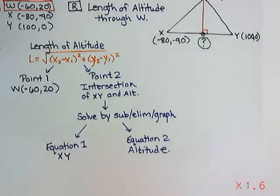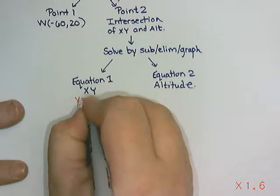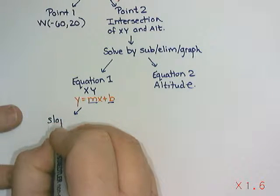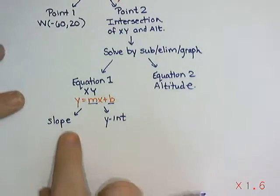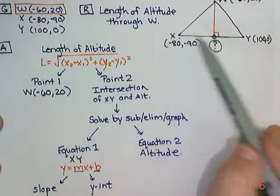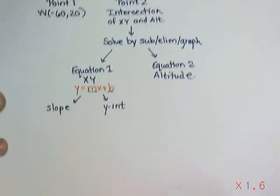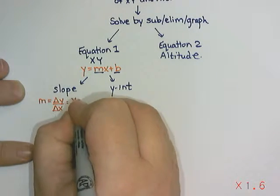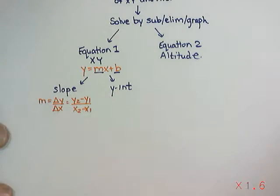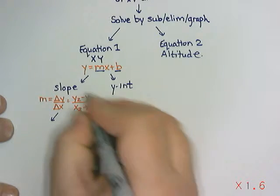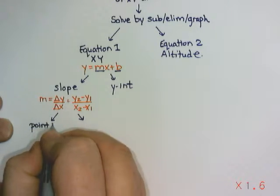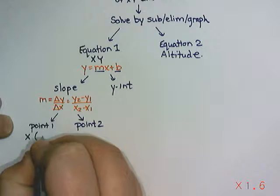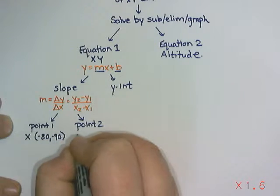So to find the equation of the side XY, an equation of a line, we always use the basic formula y = mx + b. And we need to find a slope, that's m, and a b, that's the y-intercept. To find the slope, we can calculate it with two points if we have two points. And I do. We have X and Y. We do know the two endpoints. So we can find the slope using the formula, Δy/Δx or (y₂-y₁)/(x₂-x₁), whichever you like better. And in either formula, you do need two points. And those two points are going to be the points X and Y, since we're finding the equation of XY. So X, in this case, is (-80, -90) and Y is (100, 0).